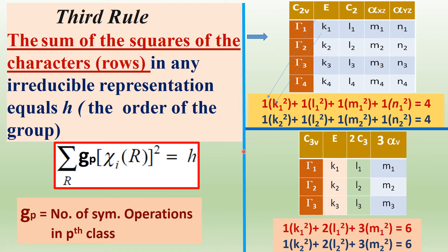Let us apply Rule 2 to the C3V point group. Squaring the dimensions: K1² + L1² + M1² = 6 (order of the group). Specifically: 1·K1² + 2·L1² + 3·M1² = 6, where 1, 2, 3 are the numbers of symmetry operations G_P in each class (E, 2C3, 3σV respectively).